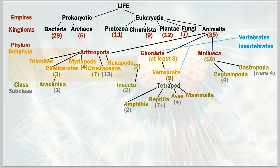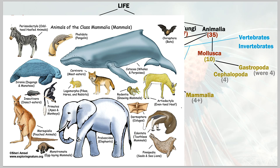The final tetrapod class is mammalia — mammals — with four or more subclasses. Mammals are warm-blooded, and their young drink milk. Yes, whales are mammals — they breathe air through a nostril rather than gills, are warm-blooded, their young feed on milk. And some mammals can fly, like bats.